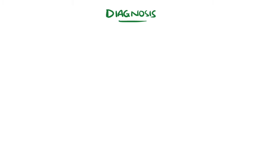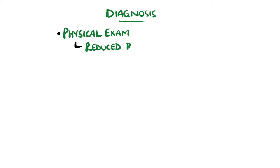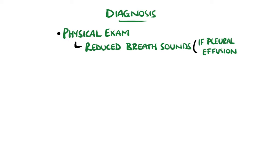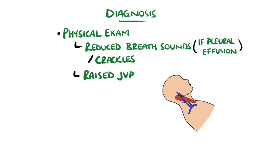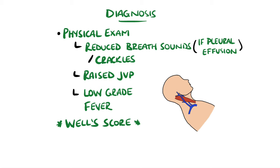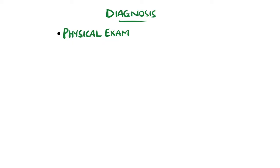A history and physical exam can give a suspicion of venous thromboembolism. The physical exam can detect the clinical features of deep vein thrombosis, and if a pleural effusion has been generated by a pulmonary embolism, you may detect reduced breath sounds or crackles. Features of an impaired right ventricle can include a raised jugular venous pressure, and a low-grade fever is also common. The Well score is used for both deep vein thrombosis and pulmonary embolism to estimate the likelihood of the pathology, though more tests are usually required.